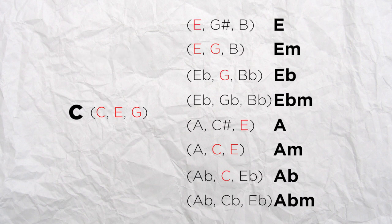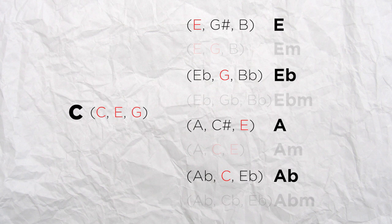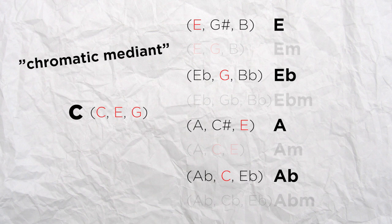Things get interesting with the chords that share only one note with the C major. These are the E major, the Eb major, the A major and the Ab major. These are the chords that are called the chromatic mediants. Each bring a particular color and all are particularly tasteful.